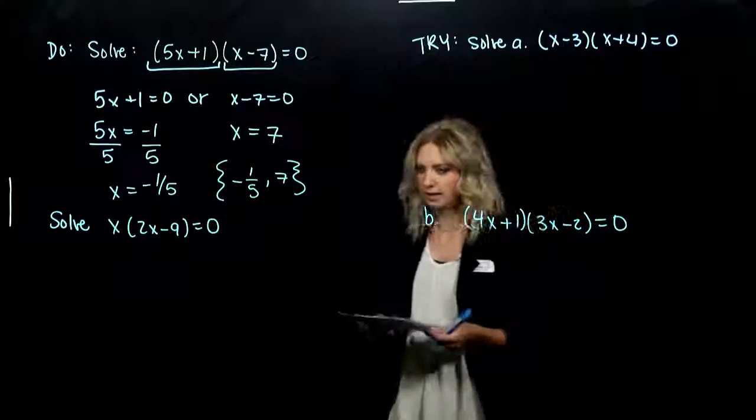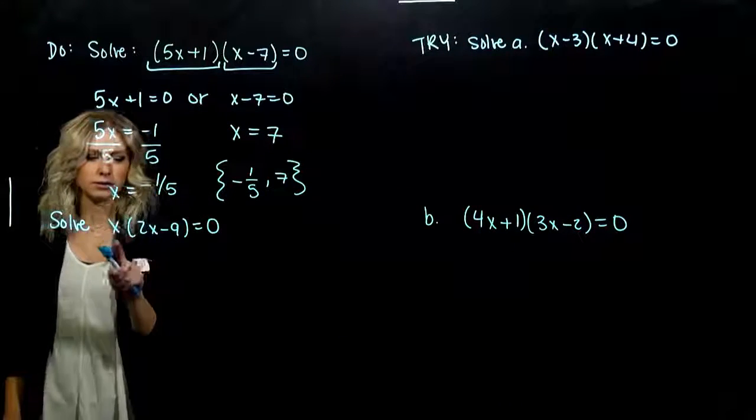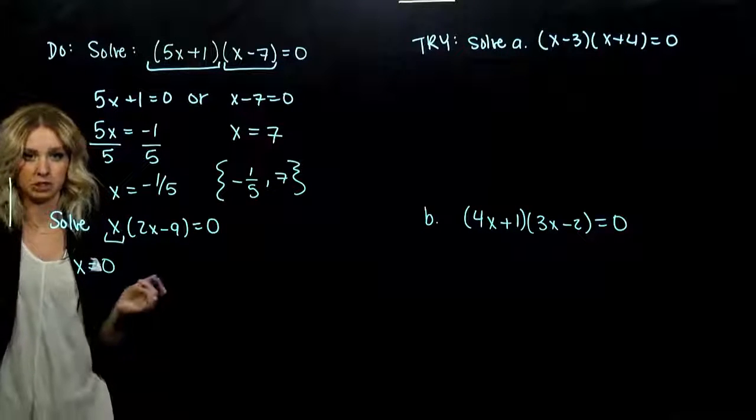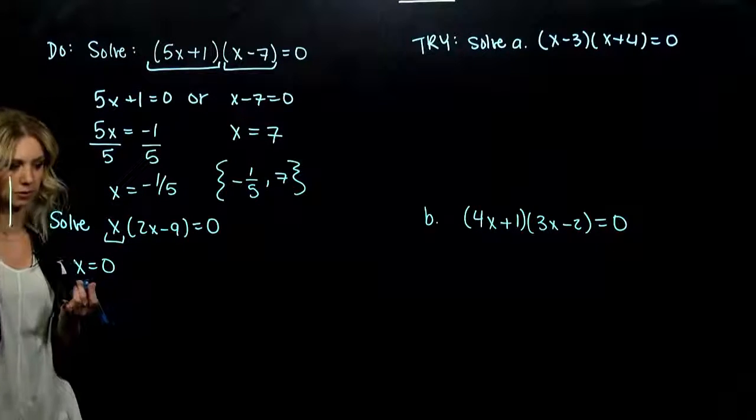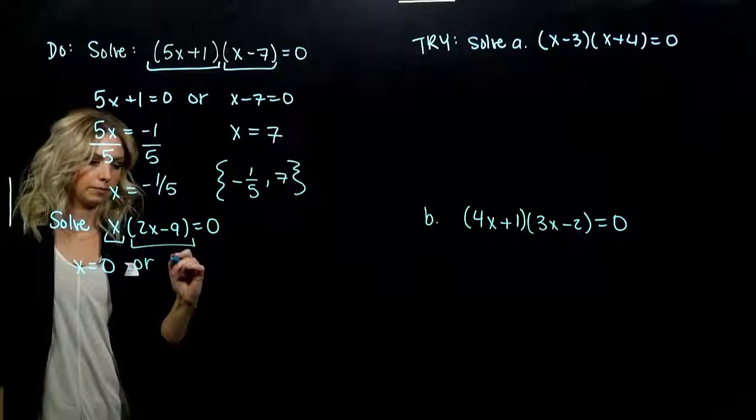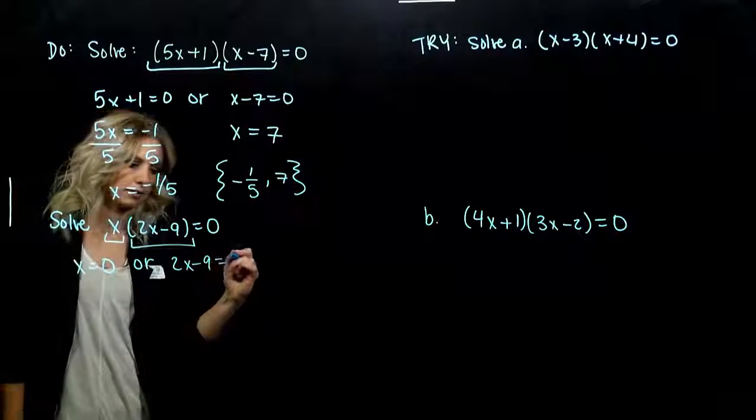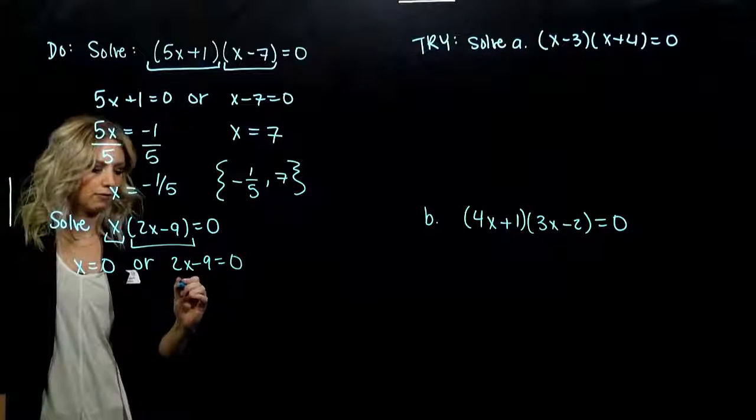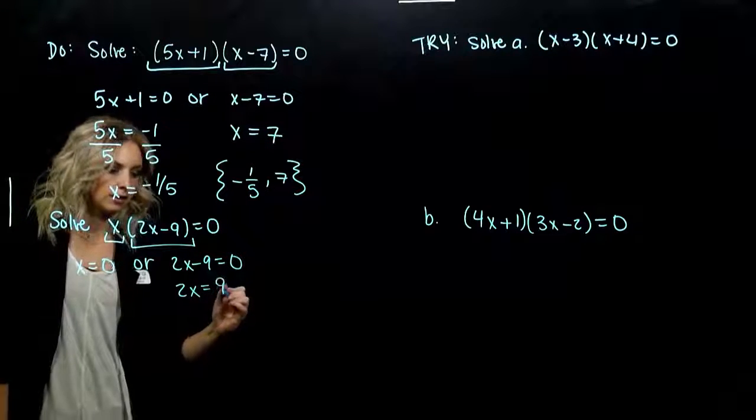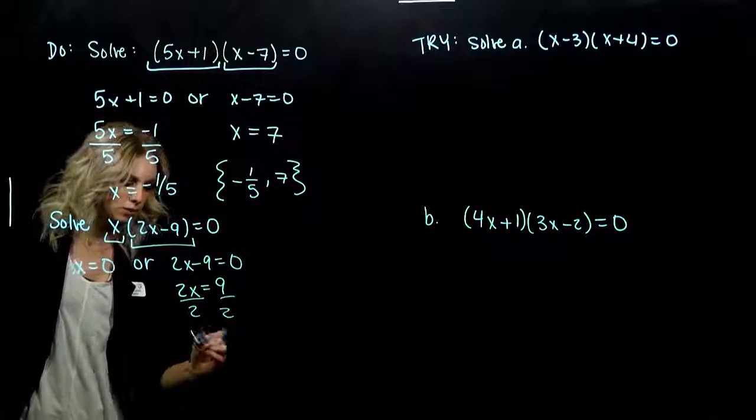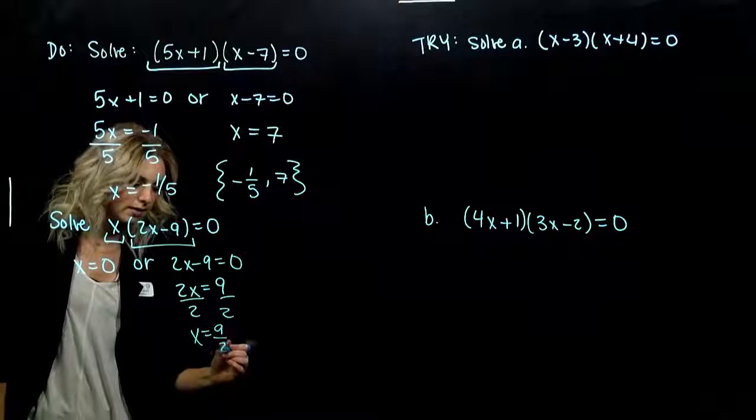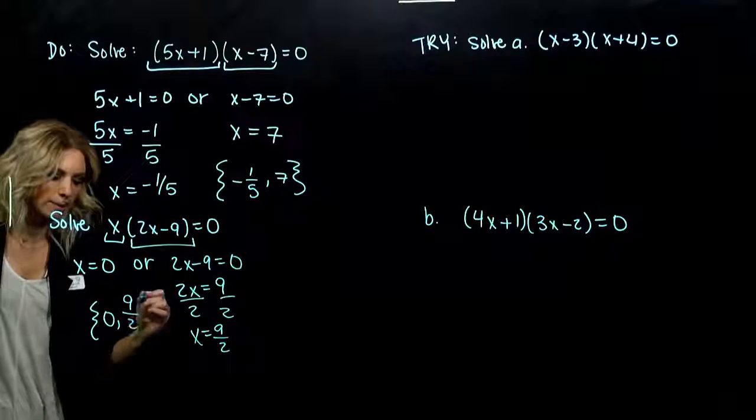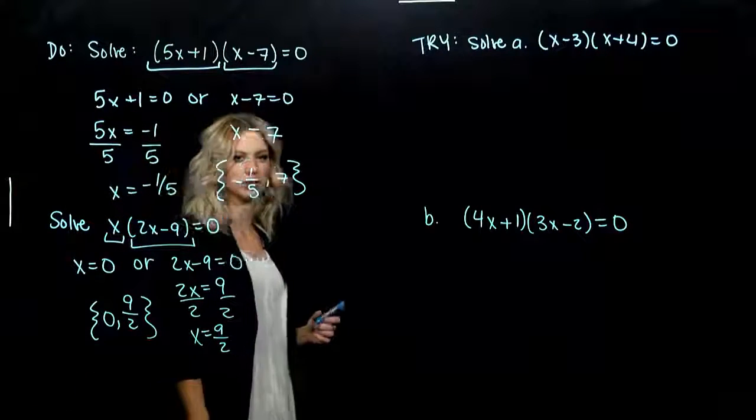Next one. Again, we've got product of two quantities. So either the first one is equal to zero. Done. Solved. X is equal to zero. Or the second part, 2x minus nine, is equal to zero. That one requires a little bit more work. What do we have to move first? The nine, and we need to divide by two. X is nine halves. So our solution set in this case is either zero or nine halves. That will make our equation true.